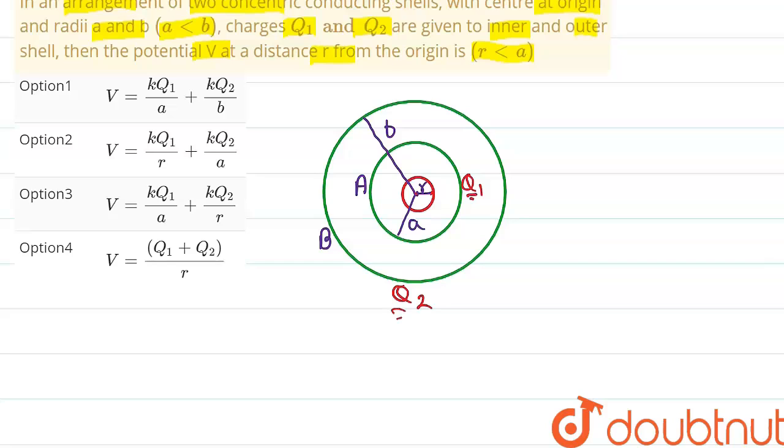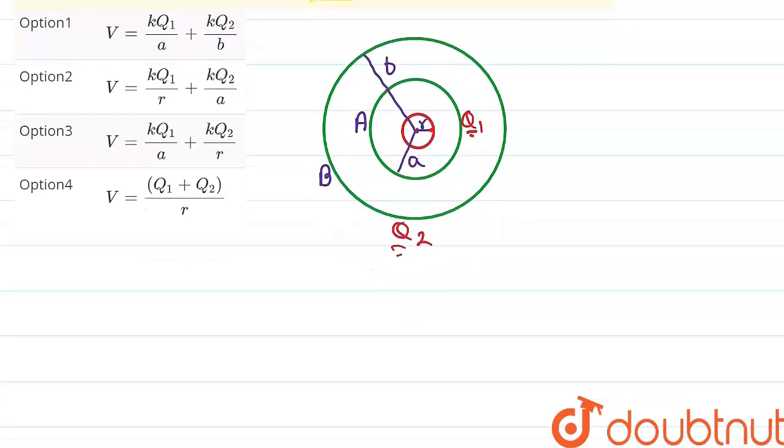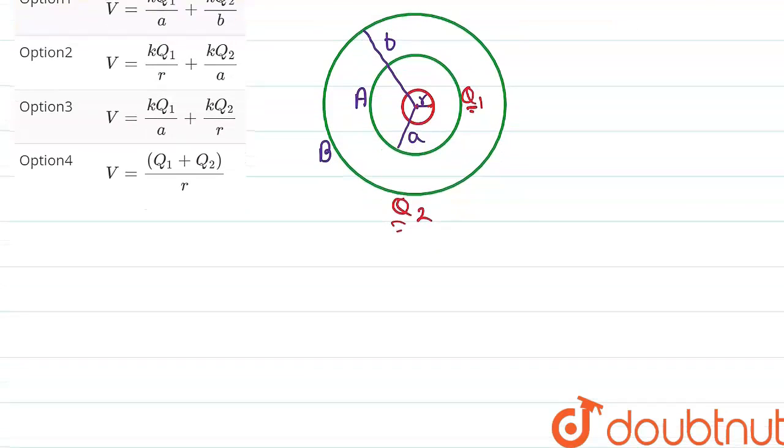Now, we have to calculate the potential at this surface, that is at radius r. Now we know that in a spherical conducting shell, if the potential at the surface is V, then inside the shell everywhere the potential will be V. That is the same.